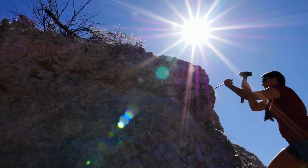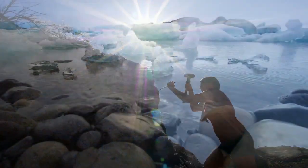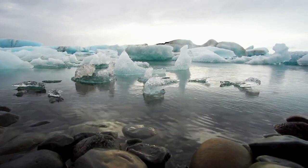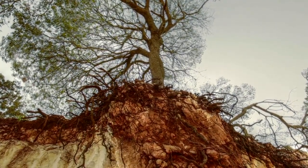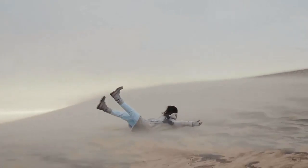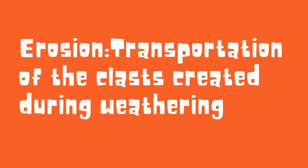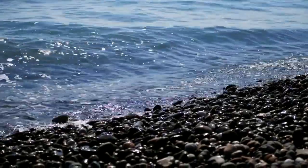Weathering is when pre-existing rocks are broken down. This may occur by freezing and thawing of water inside the cracks of rocks, trees and other plants growing into cracks, and even blowing winds. Next, you have erosion, which occurs when clasts or pieces of rocks created during weathering are transported by either wind, water, or even gravity to a new location.